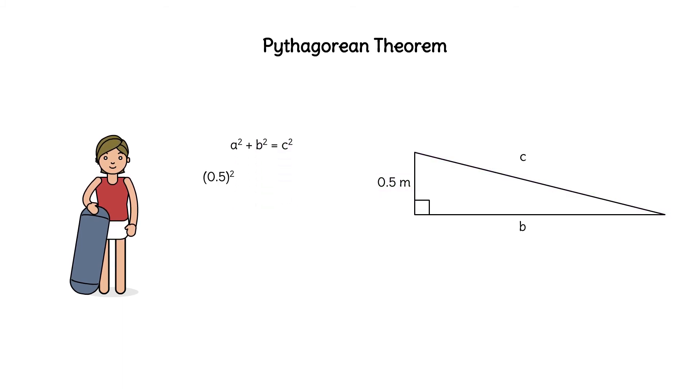a is .5, b is 2, and we'll solve for the hypotenuse c. .5 squared is .25, 2 squared is 4. Adding those gives us 4.25.